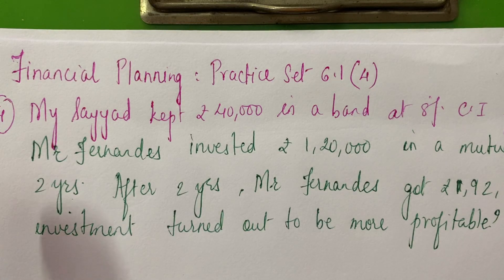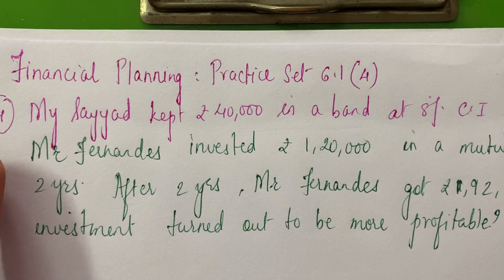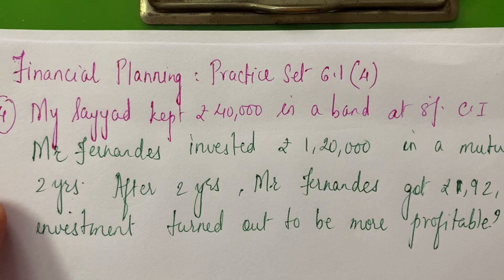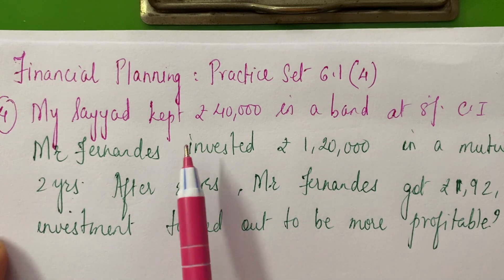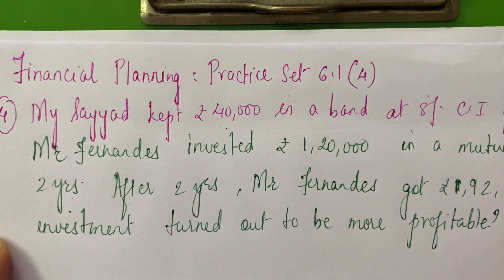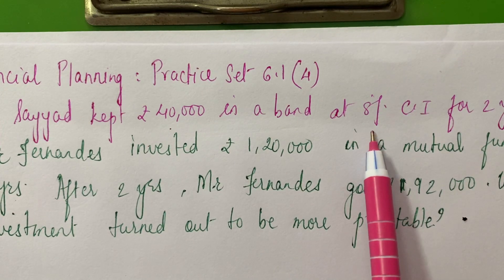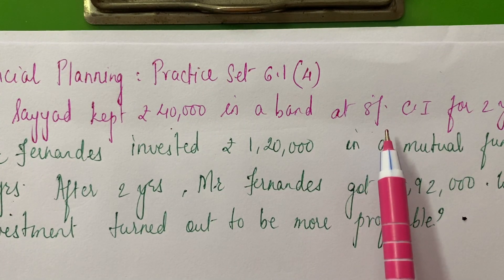We have the investments done by two people, that is Mr. Syed and Mr. Fernandez. Mr. Syed, he invested Rs. 40,000 in a bank at 8% compound interest for two years.